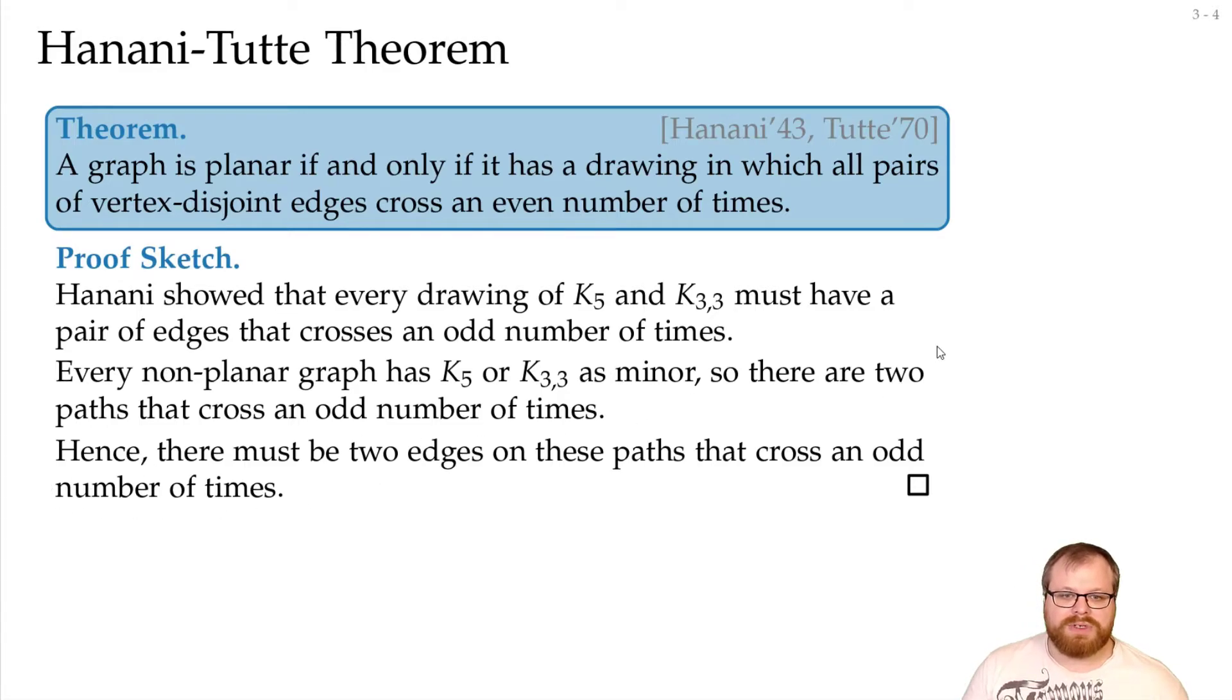And then there must be at least two edges that cross an odd number of times on these paths, because if we only have even crossings, then we cannot get to a total odd number. And that means that every non-planar graph must have at least one pair of edges that cross an odd number of times.